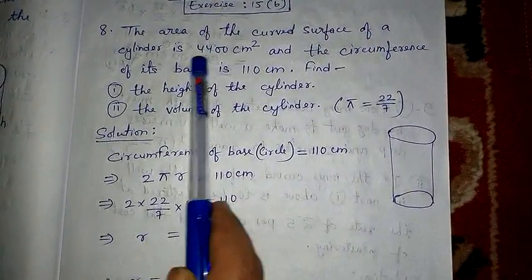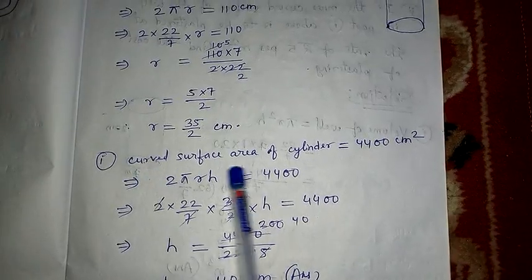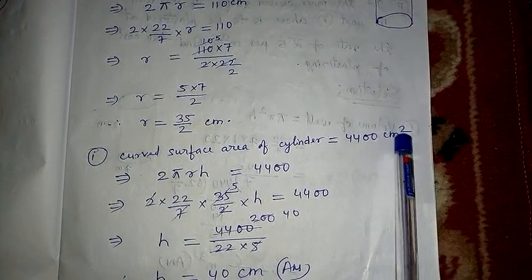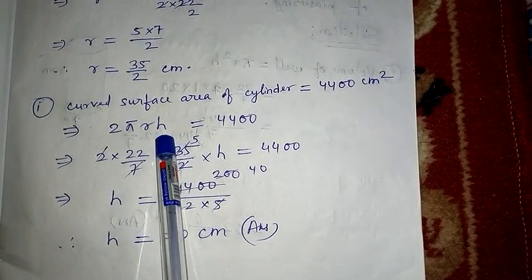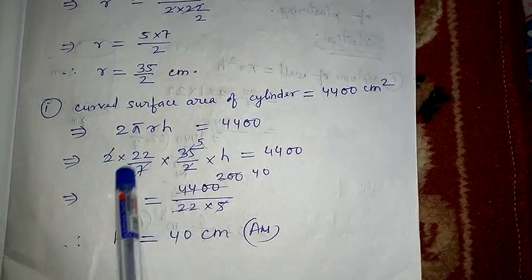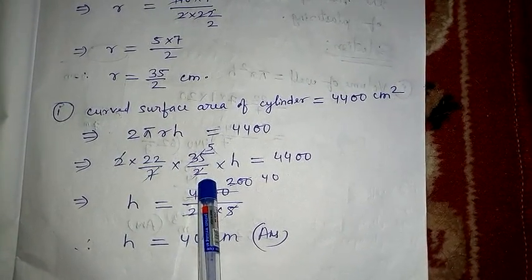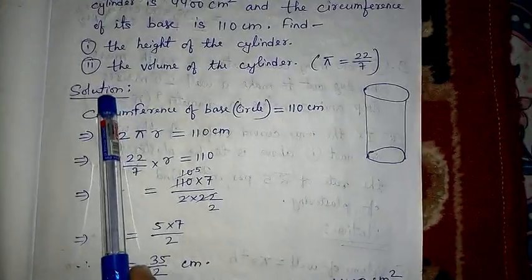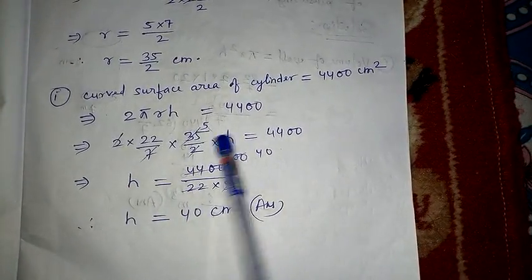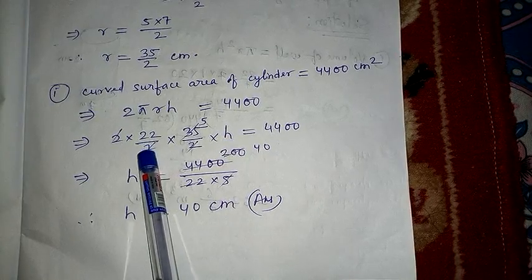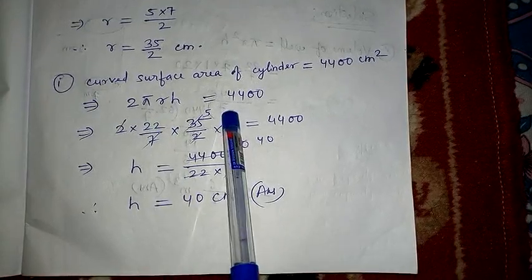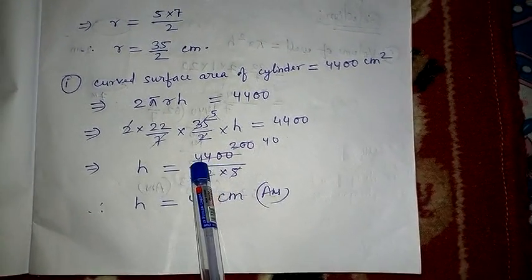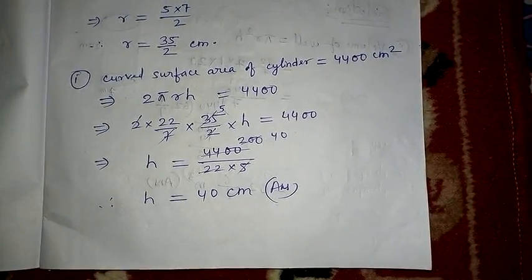Now I will use curved surface area, whose value is 4400 centimeter square. The formula for curved surface area of a cylinder is 2πrh. Putting the respective values: 2 × (22/7) × (35/2) × h = 4400. After cancelling 7 with 35 and the 2s, we get 22 × 5 × h = 4400. After cancellation, the height is 40 centimeter.